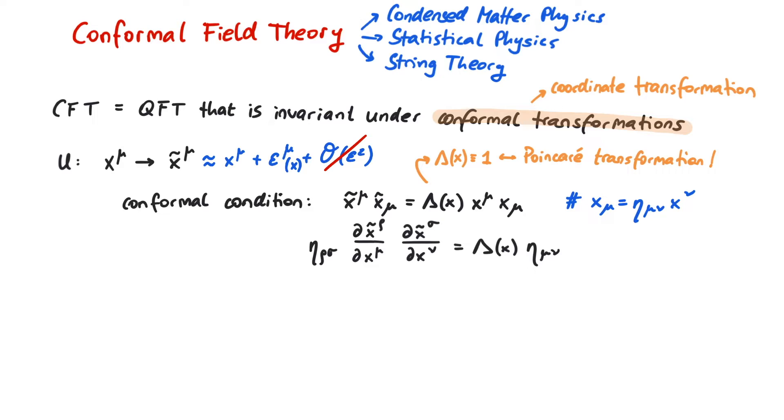From now on, we ignore terms of order epsilon squared and plug this into our defining equation for conformal transformations. If we differentiate x mu with respect to x nu, we get a delta mu nu. Using this, we can calculate the left-hand side and get eta mu nu plus d mu epsilon nu plus d nu epsilon mu.